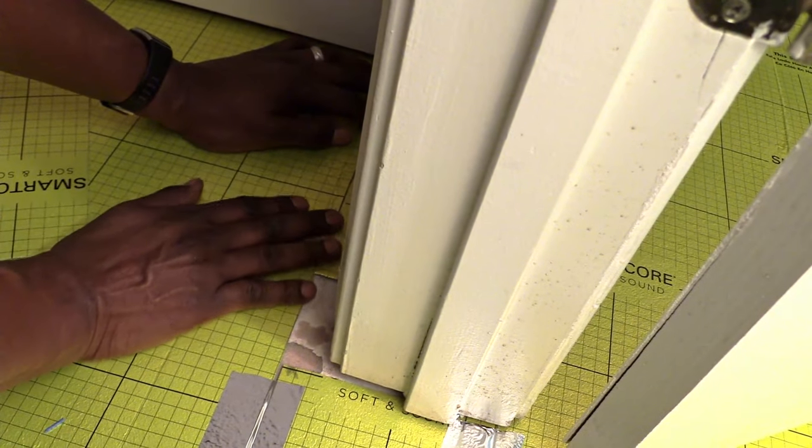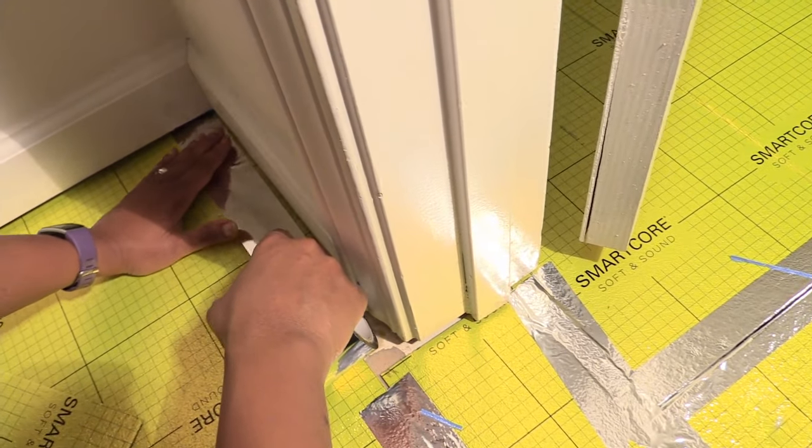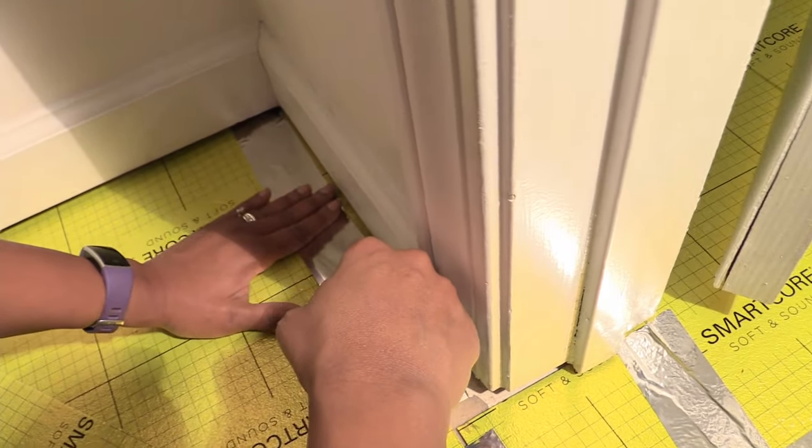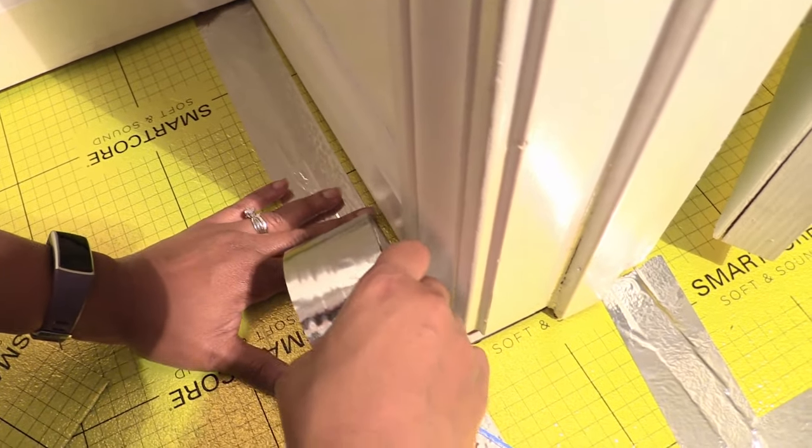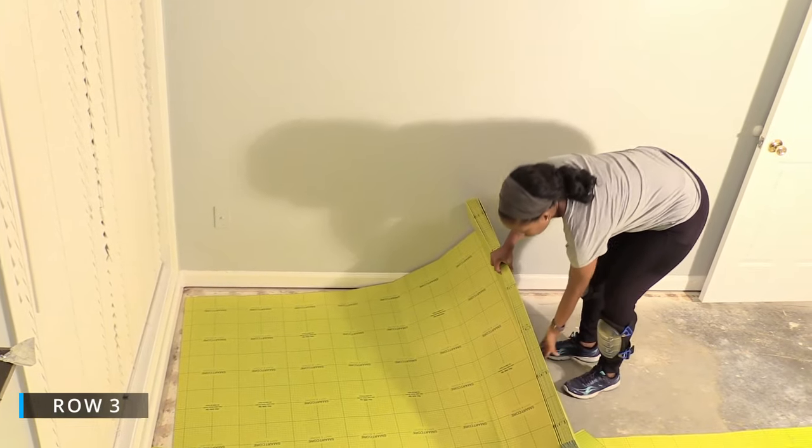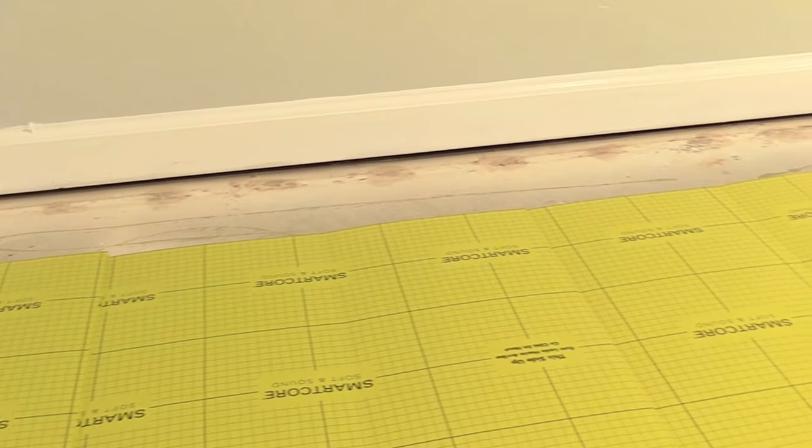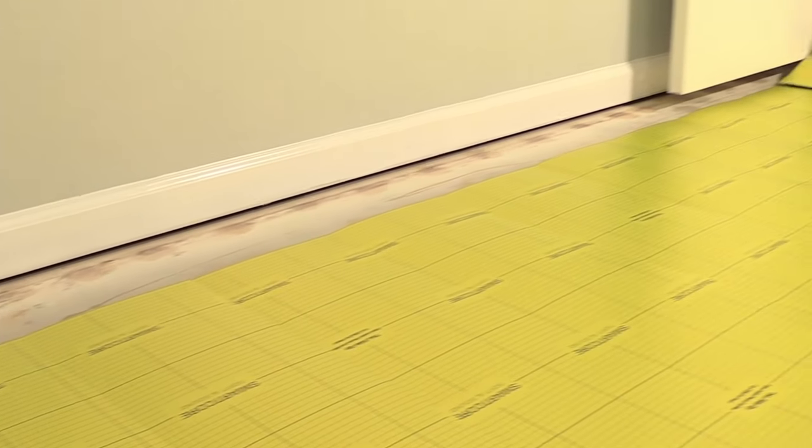It's just as easy to lay this underlayment even in a much smaller space like a closet. In case you're wondering, just like a floating floor, there's no need to glue or nail it down. It stays in place.